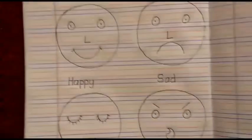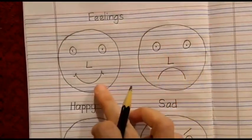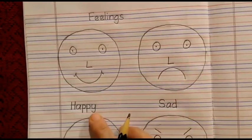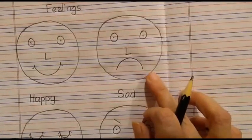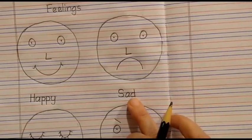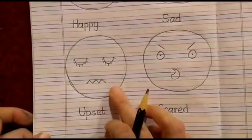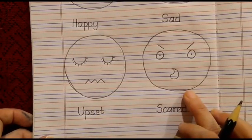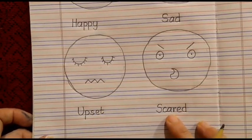So, what four feelings we have drawn today? Happy. Happy. The word is happy. Sad. Sad. The word is sad. Upset. The word is upset. And scared. The word is scared.